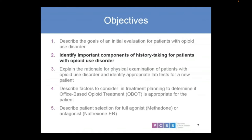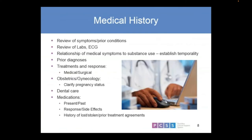Moving on to Objective 2: identifying important components of history-taking for those with opioid use disorders. A thorough medical history is vitally important — reviewing symptoms, labs, relationships with other medical symptoms, and their substance use to try to get a chronology. What came first, chicken or the egg, or are they happening at the same time? Have they had this problem before? Is this their fourth or fifth time through treatment? Getting a thorough medical history helps you understand the patient, where they've been, and what their body has been through.